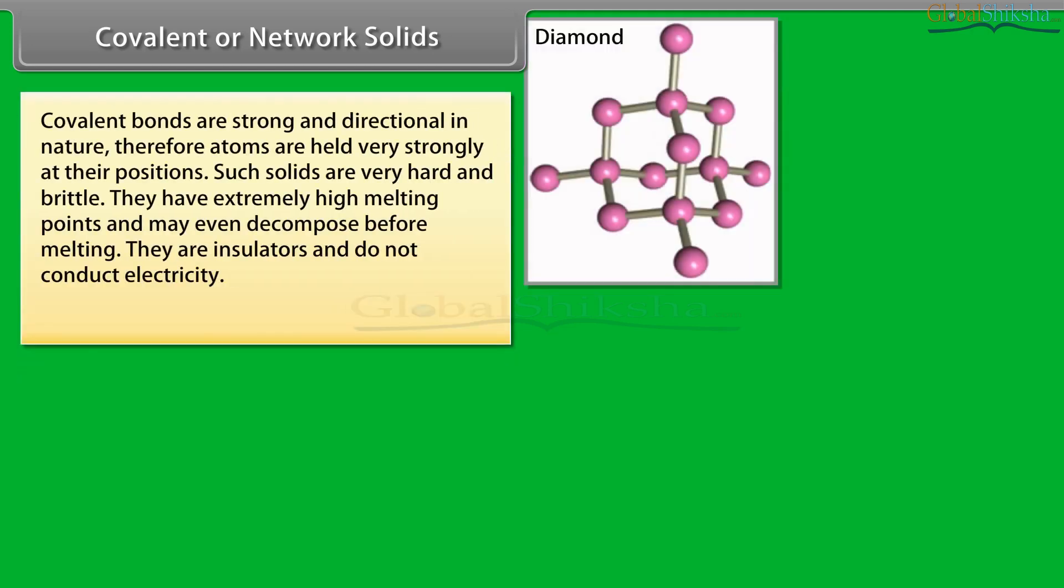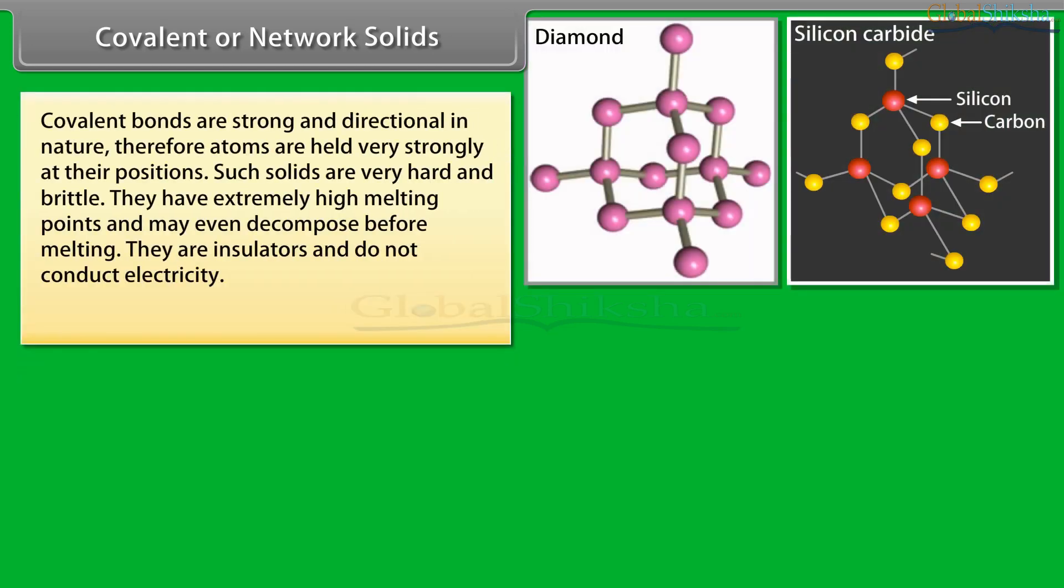Covalent bonds are strong and directional in nature. Therefore, atoms are held very strongly at their positions. Such solids are very hard and brittle. They have extremely high melting points and may even decompose before melting. They are insulators and do not conduct electricity. Examples: Diamond, Silicon, Carbide.